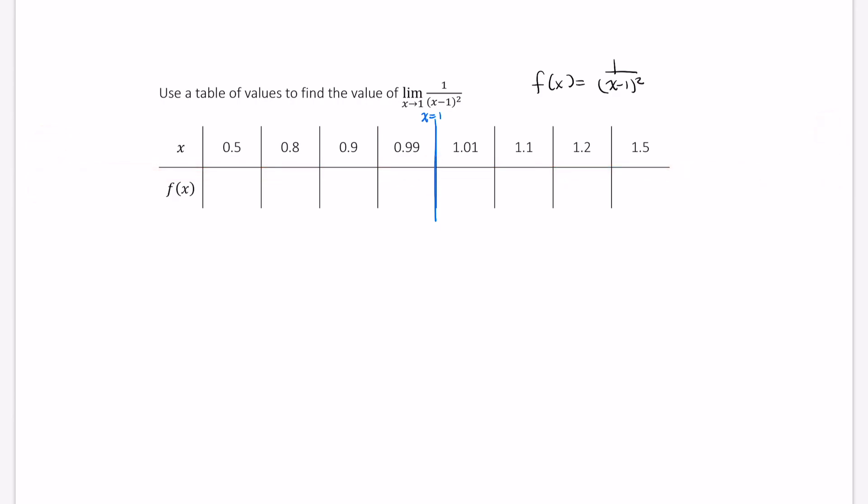So let's go ahead and fill out some of these values. I will help out with a couple of them. So let's start with f of 0.5, which is 1 half. That's equal to 1 over 1 half minus 1 squared. And that's equal to 4.